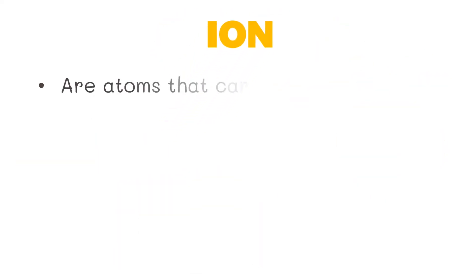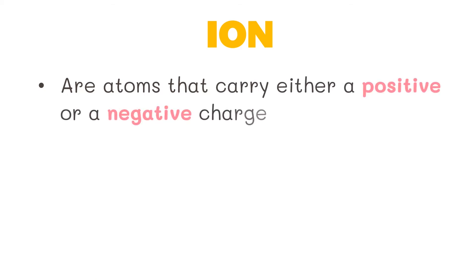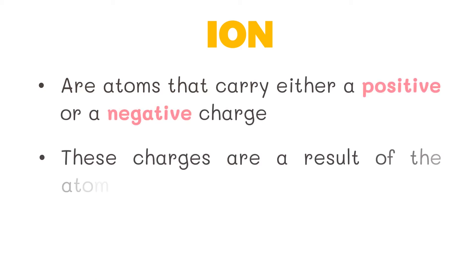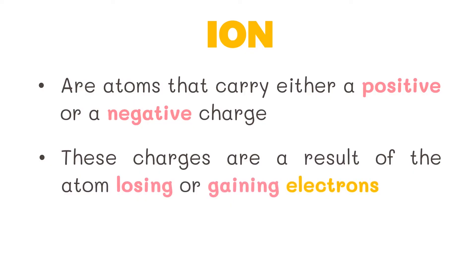Ions are atoms that carry either a positive or a negative charge. These charges are a result of the atom losing or gaining electrons.